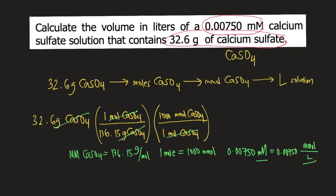Knowing this, we plug in 0.00750 millimoles of calcium sulfate at the bottom and 1 liter on top, so millimoles will cancel and your final unit would be liters of solution.